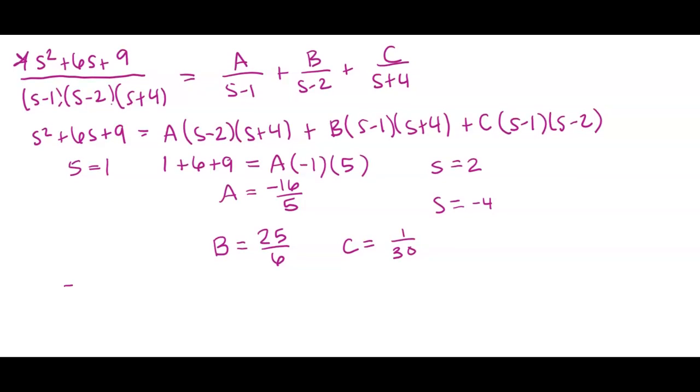So I have negative 16 over 5 over S minus 1, 25 over 6 over S minus 2, and 1 over 30 over S plus 4.